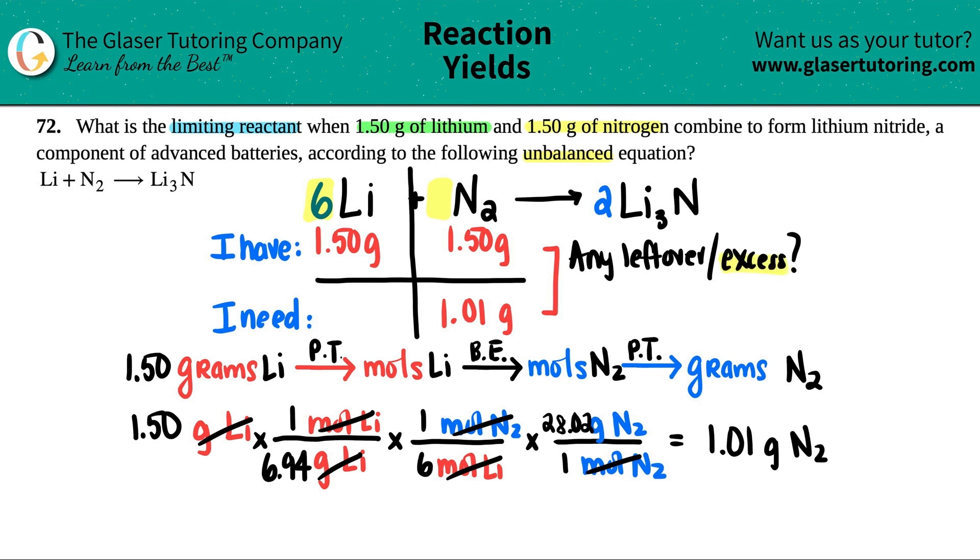Usually we call this excess. If you have 1.5 and you only need 1.01 grams, yeah, there is going to be some excess. How much excess? You would just take these two numbers and subtract it. So 0.49 grams of excess. And if you have any in excess, this is called the excess reagent. This is not the limiting reagent or the limiting reactant.